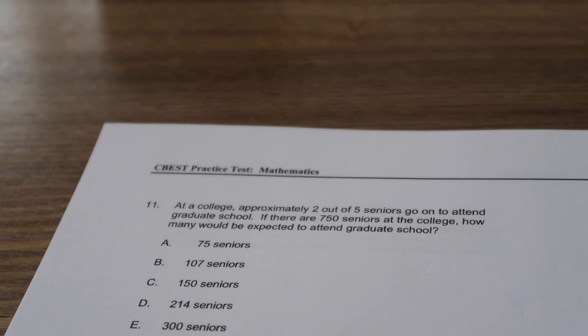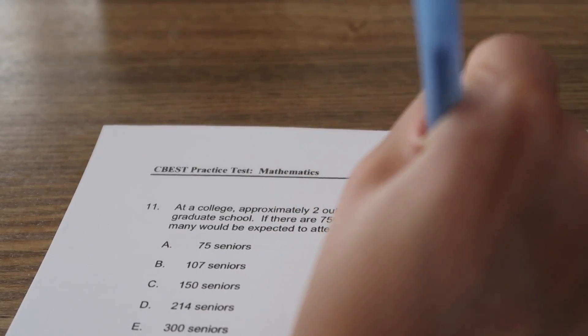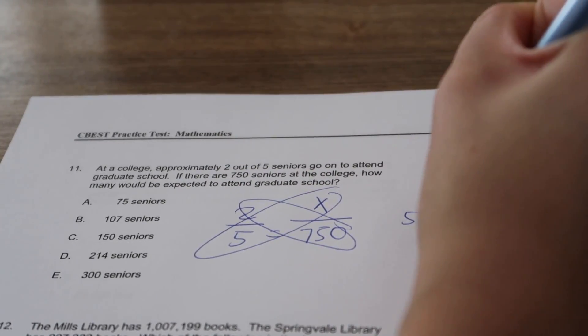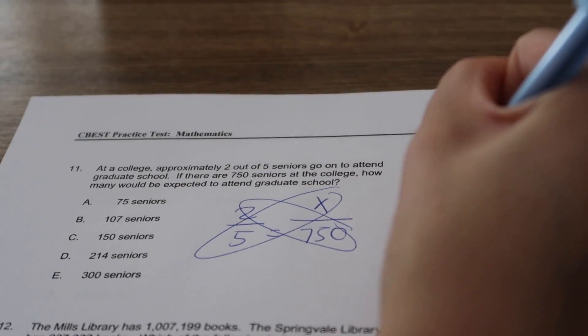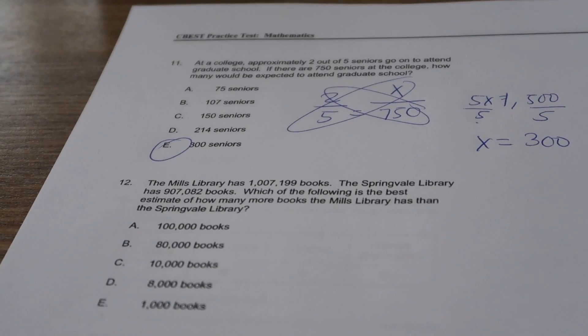At a college, approximately two out of five seniors go on to attend graduate school. If there are 750 seniors at the college, how many would be expected to attend graduate school? It's a ratio. So two out of five equals something over 750. That means I'm going to cross multiply. I get 5x equals 1,500, divide by five, divide by five, x equals 300. So about 300 seniors will go to graduate school.